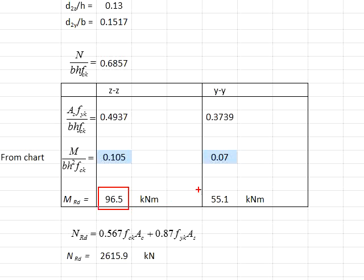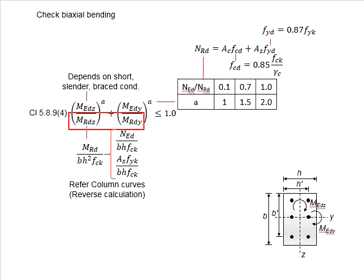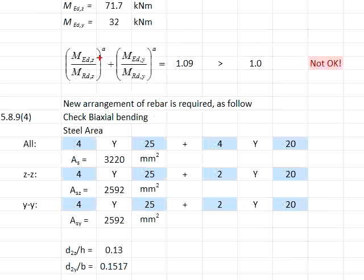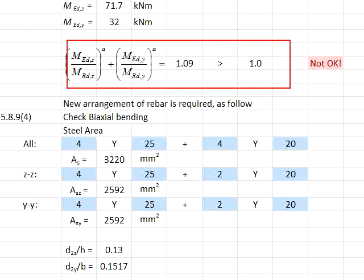You will be able to determine the moment resistance of the sections. With the moment resistances determined, and with factor 'a' as the power obtained from the interpolation, you are able to determine the summation of the two ratios to the power of 'a'. Substituting the relevant values, you obtain 1.09. This is greater than 1.0, which means the amount of reinforcement bar is not sufficient. In this case, you will need to add additional reinforcement bar to ensure this check passes.